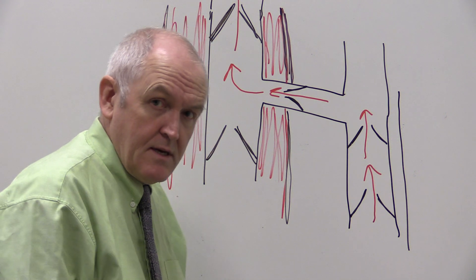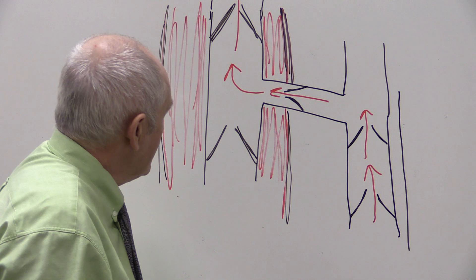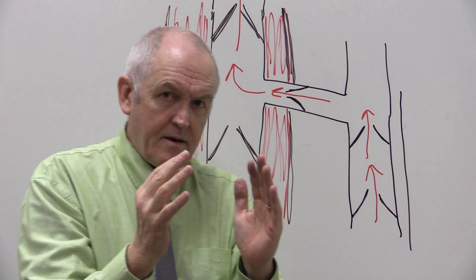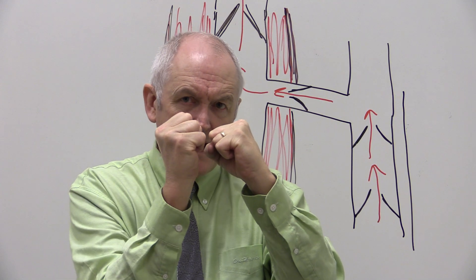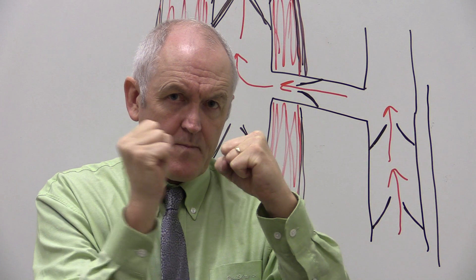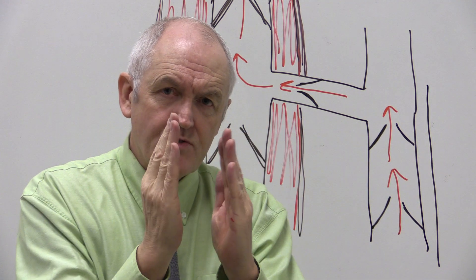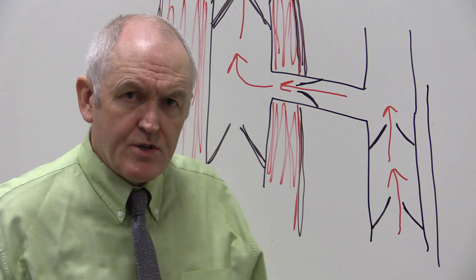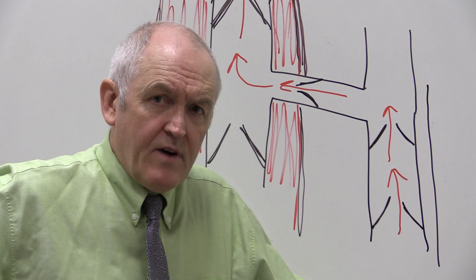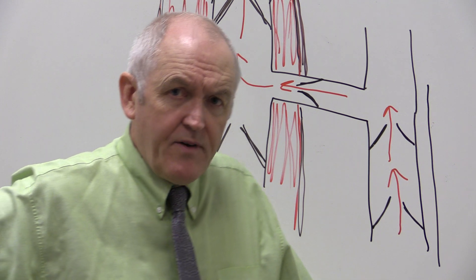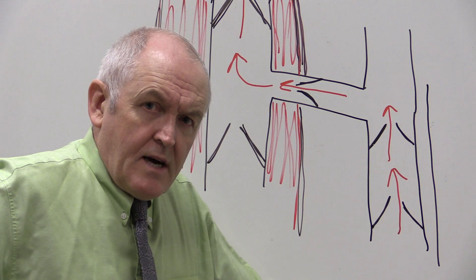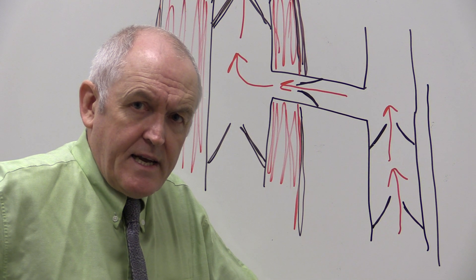Very often where there are deep veins, the deep arteries lie adjacent to the vein. Since arteries are pulsatile — expanding and contracting with each pulse — this imposes some pressure alterations onto the adjacent veins, providing some venous return through arterial pulsation. However, by far the main mechanism is contraction of the skeletal muscles. There are a couple more mechanisms to cover in the next clip.